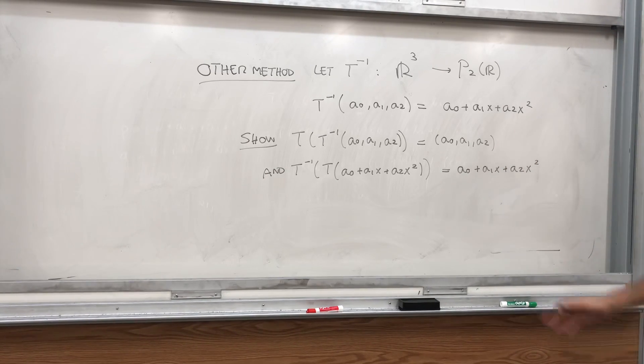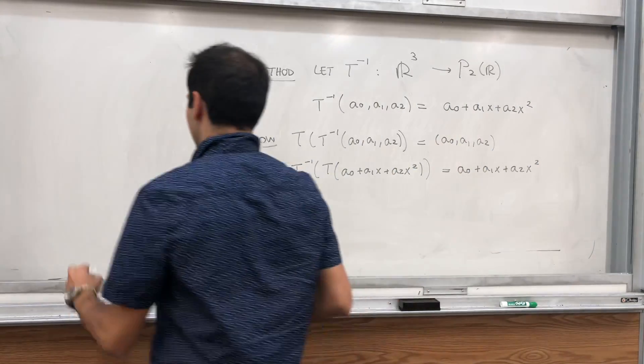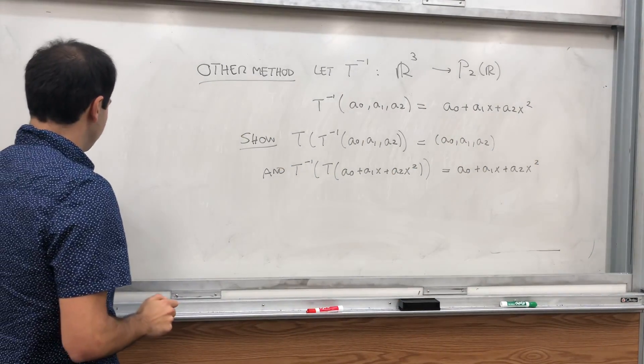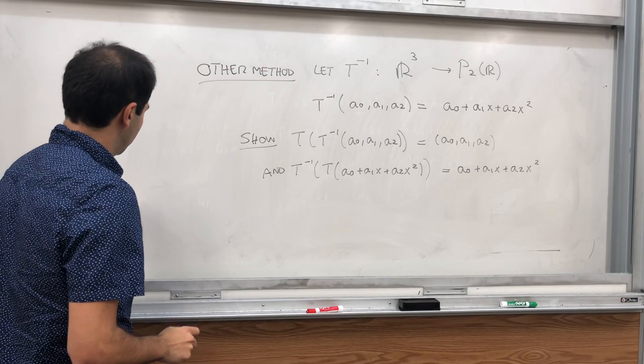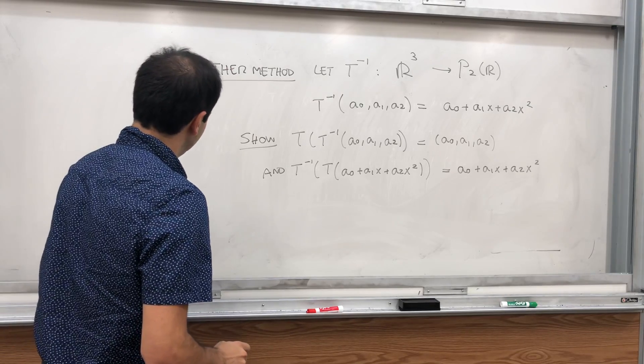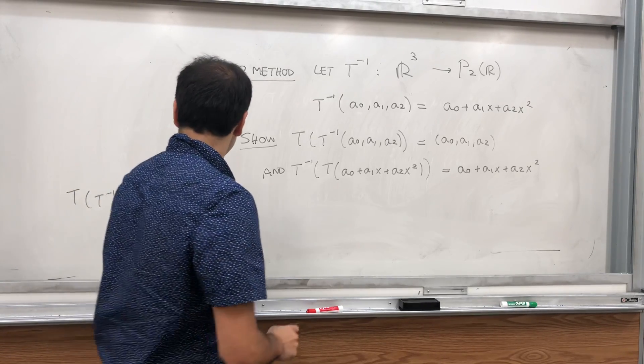That's an alternate method of showing this. And this is not too bad. Let me, for example, show the first part. T of T inverse of (a0, a1, a2) is T of, again by definition, T inverse gives you the polynomial.